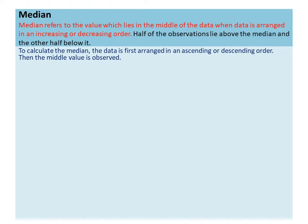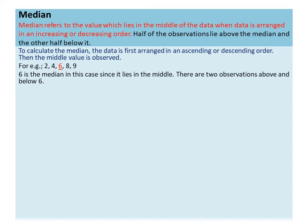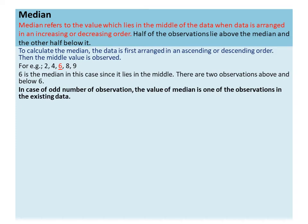For example, here five numbers are given in ascending order. Five is an odd number of observations, so the middlemost observation is the third observation. The third observation is six, therefore six is the median of this data. In case of an odd number of observations, the value of median is one of the observations in the existing data.